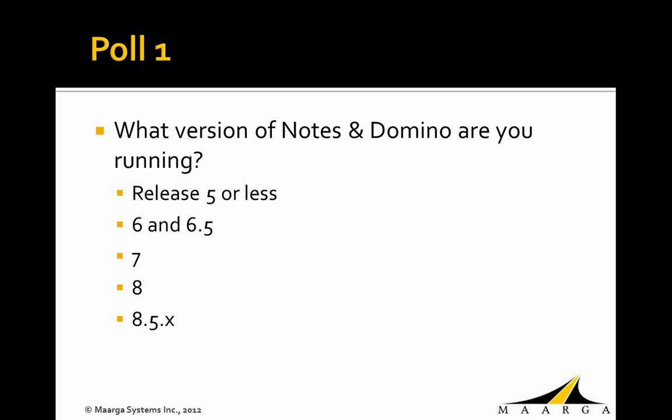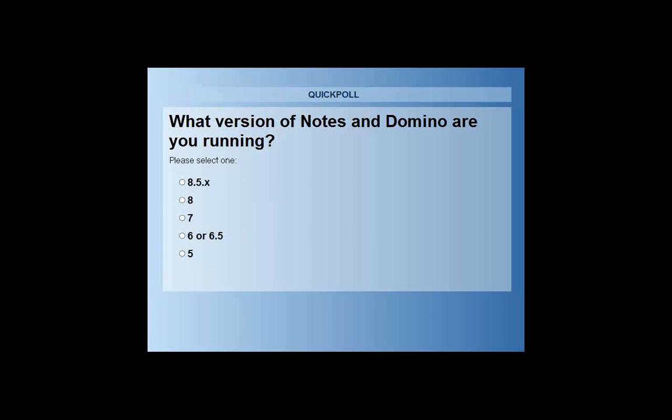We have a couple of quick polls for you to answer. The first one is about the version of the Notes and Domino environment you have. The options are release 5 or less, release 6 and 6.5, 7, 8 and 8.5 and above. Scott, can you please present the poll to the users? The poll is launching — we'll give ourselves about 15 seconds to respond. We should have some good responses. We have about 80% voted.